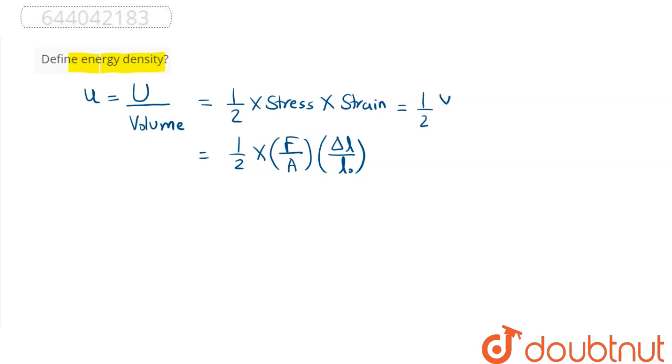So this relation comes as half of Young modulus into strain square, or we can say this relation can be written as stress square divided by two times Young modulus.